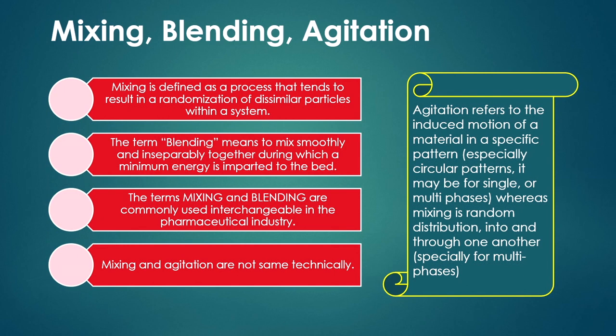Blending is the term to represent mixing smoothly and inseparably together, during which a minimum energy is required to mix those materials in the bed. Mixing and blending are commonly used interchangeably in the pharmaceutical industry. Agitation also involves mixing of solid materials, but the term agitation refers to induced motion of a material in a specific pattern, especially circular patterns. It may be for single or multiple phases — solid-liquid, liquid-liquid, or solids — whereas mixing gives you random distribution of solid materials through one another, especially for multi-phases.